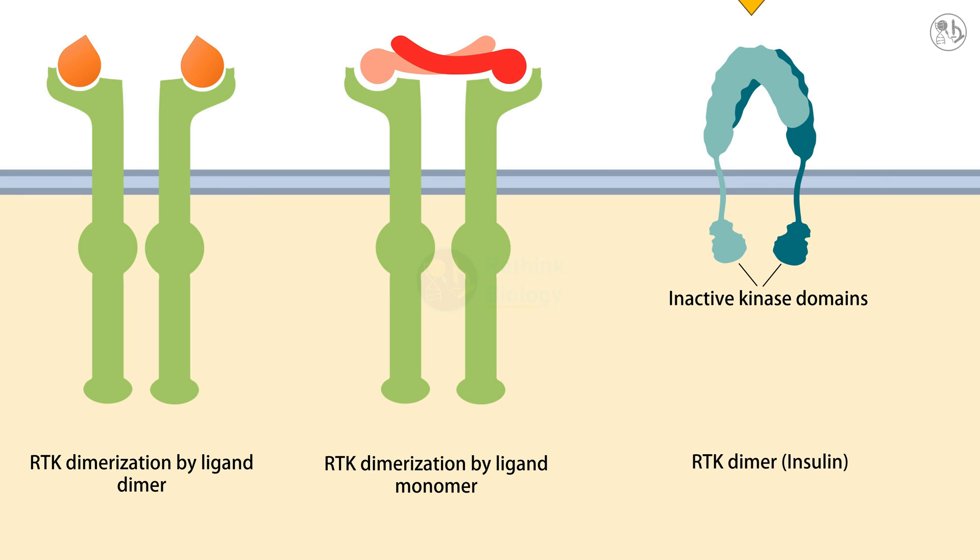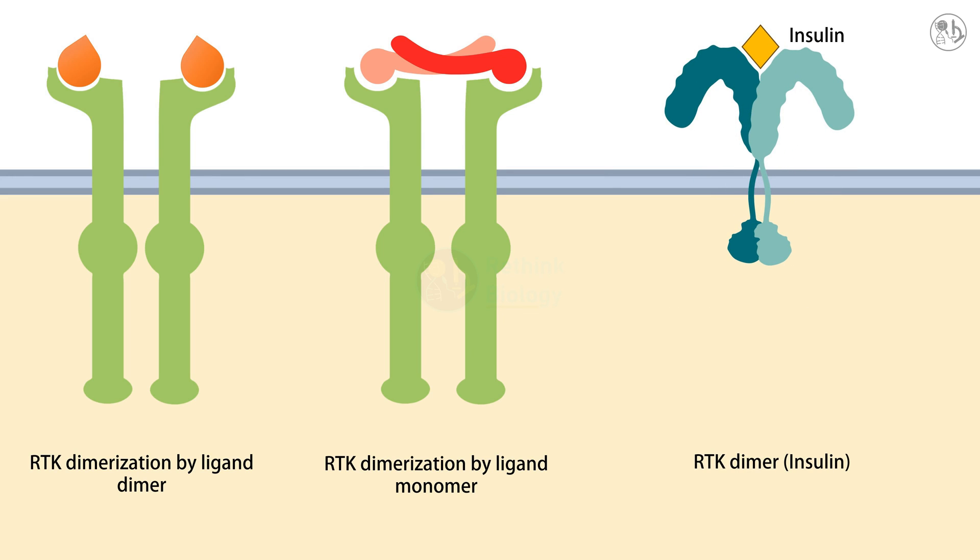One example of an RTK that is always a dimer is the insulin receptor, which responds to the hormone insulin. When insulin binds to the extracellular domain of the insulin receptor, it causes a conformational change that brings the two kinase domains closer together and they phosphorylate each other. This activates the insulin signaling pathway, which stimulates the transport of glucose into the cells.